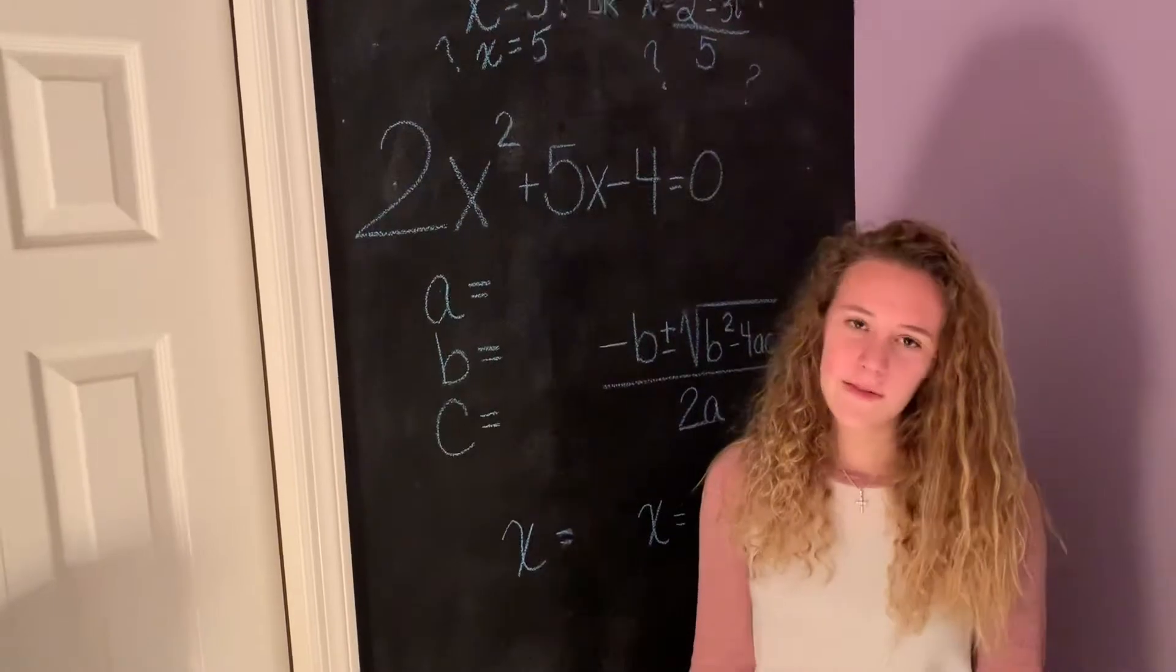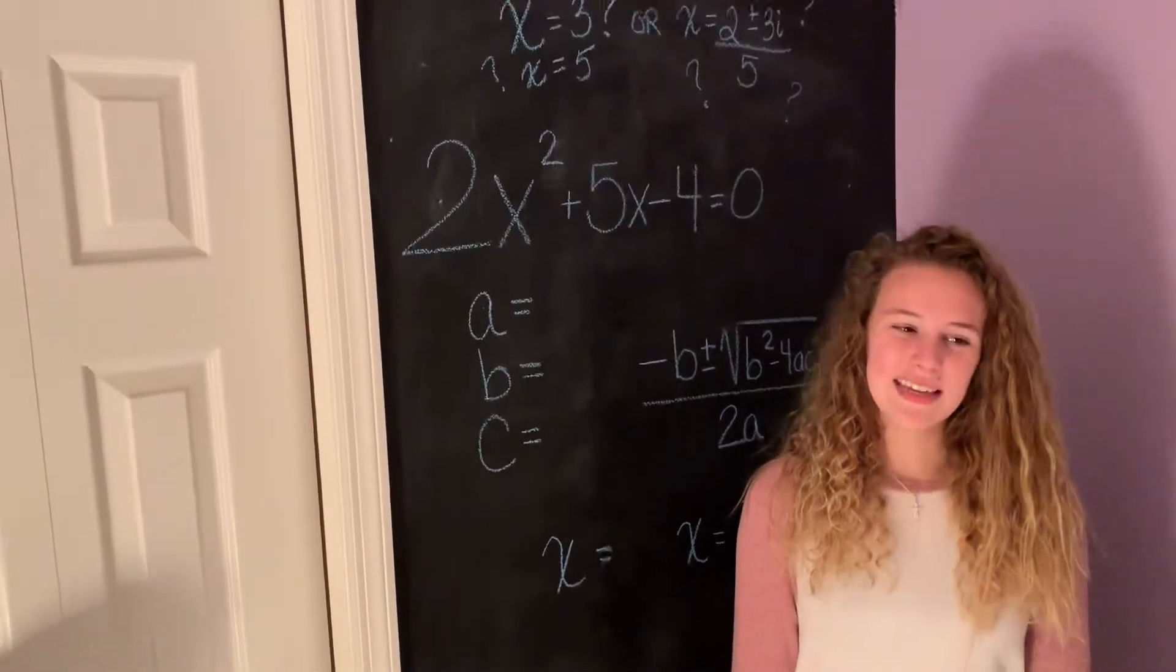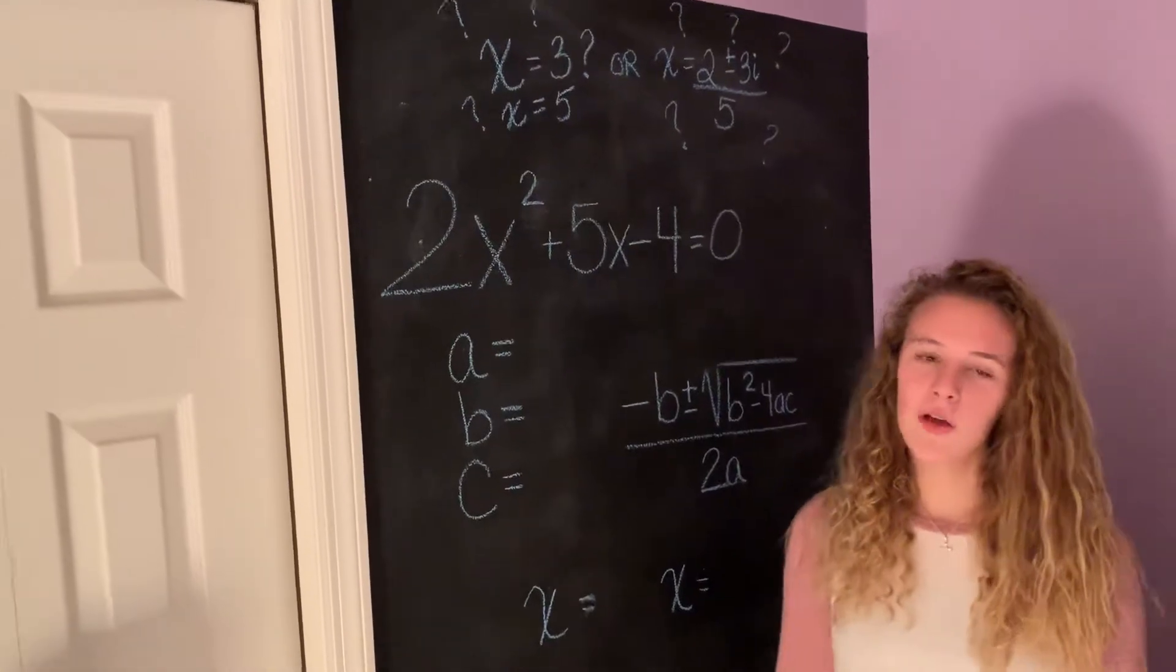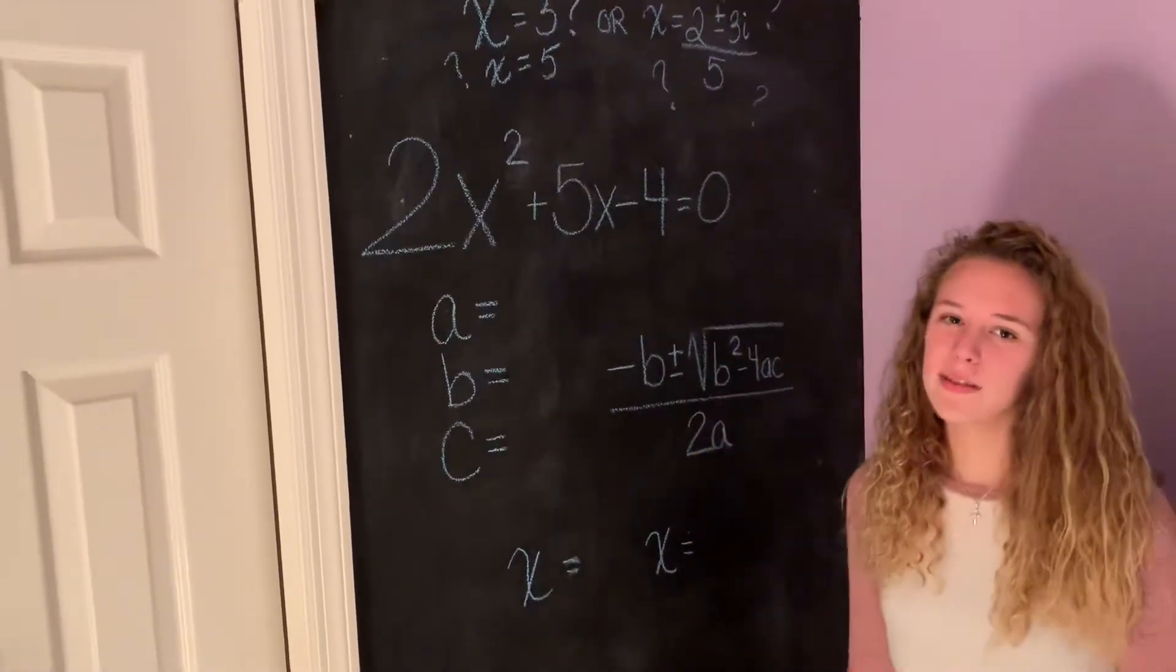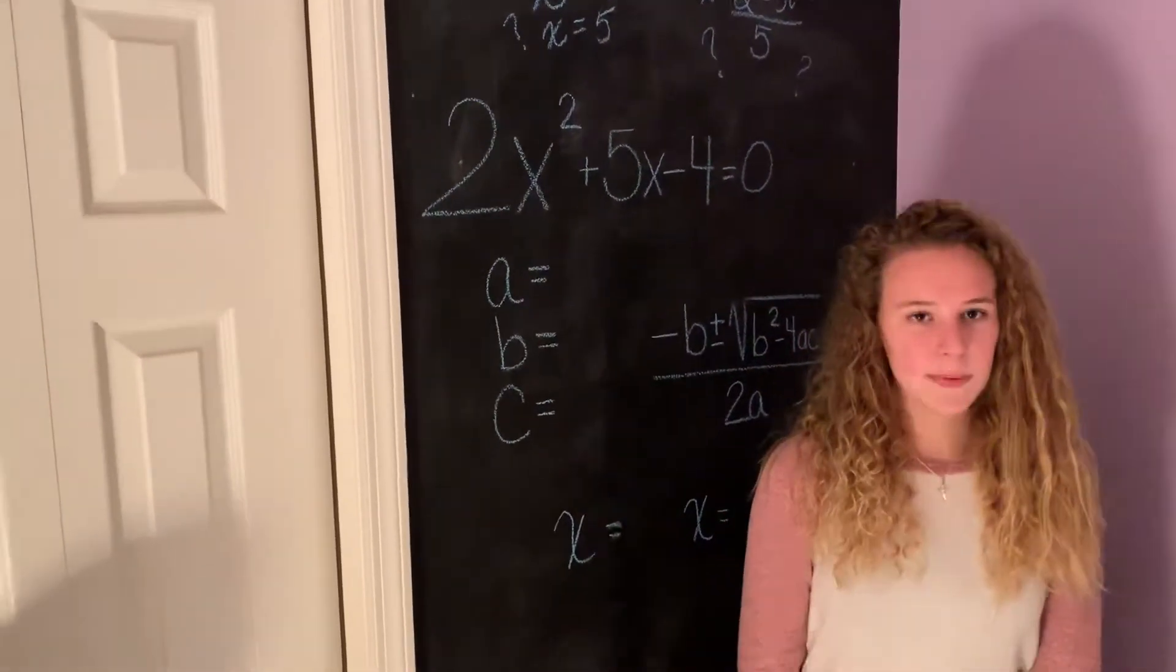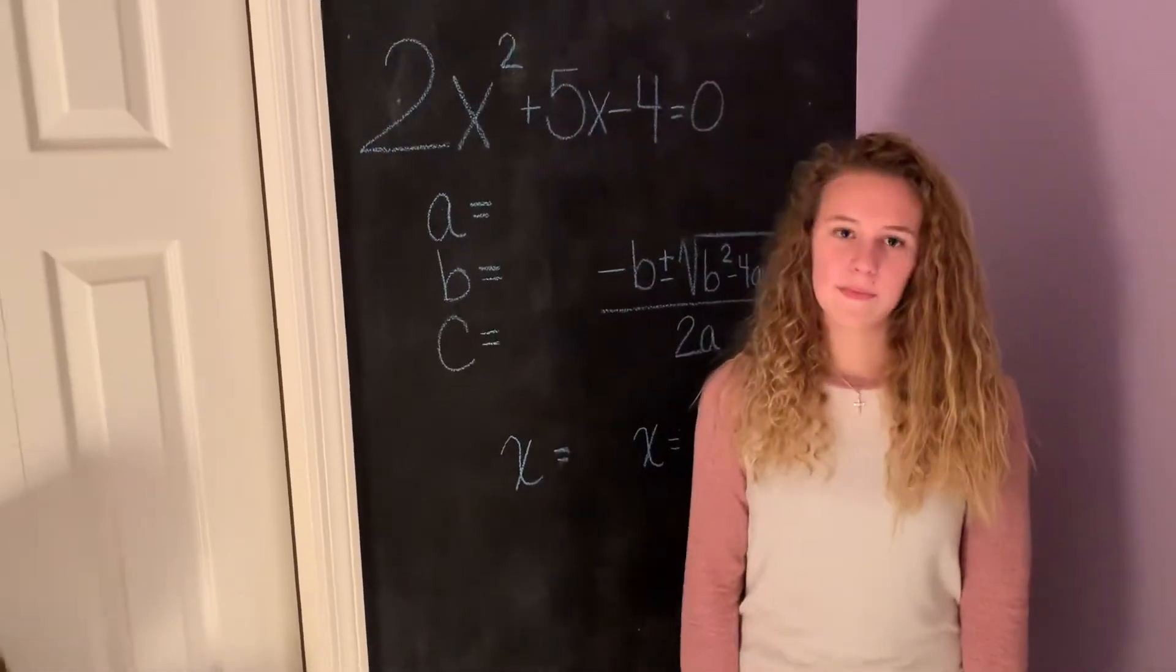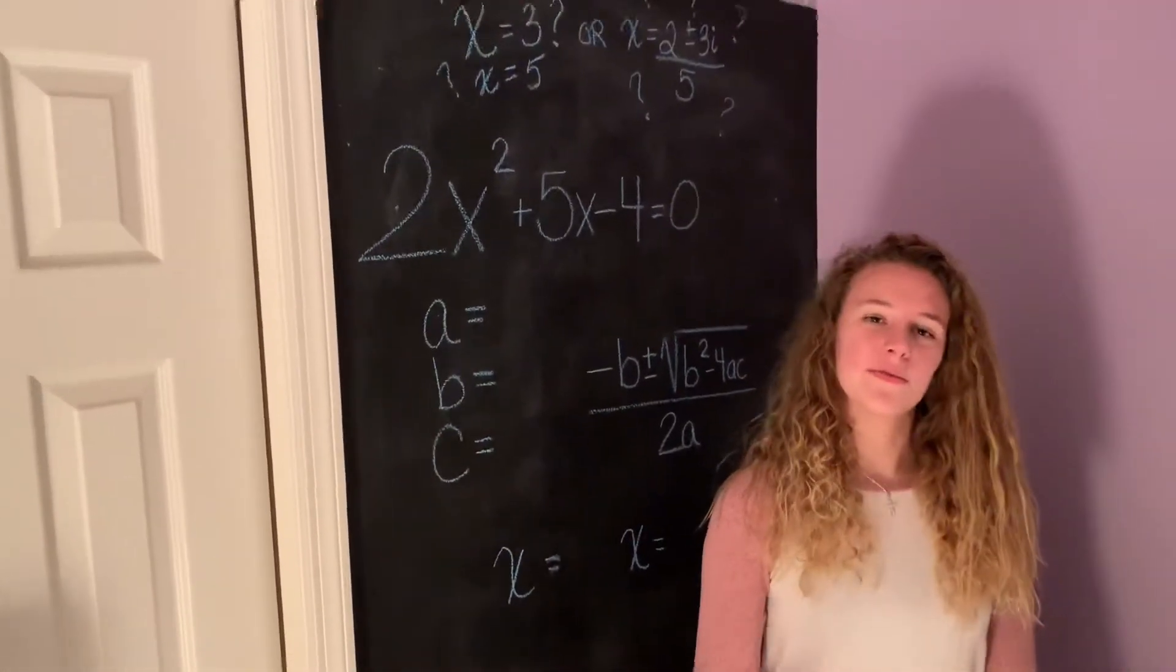If you want to graph this, then you need to find intercepts aplenty. You must use your mind. C is the Y intercept. For X, there's none or 1 or 2. That's why I'll solve for X just for you.